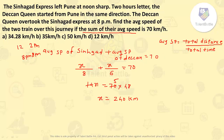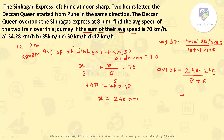Now what they have asked is the average speed of the two trains combined. We want to calculate average speed considering both trains together — total distance divided by total time. Total distance is distance travelled by Sinhagad plus distance travelled by Deccan Queen: 240 + 240 = 480 km. Total time: Sinhagad took 8 hours and Deccan Queen took 6 hours, so total time is 14 hours.